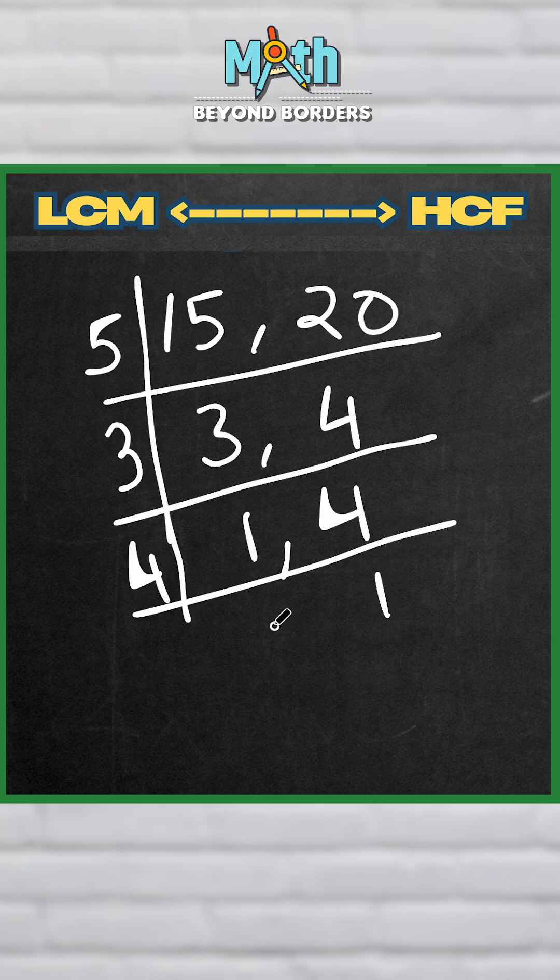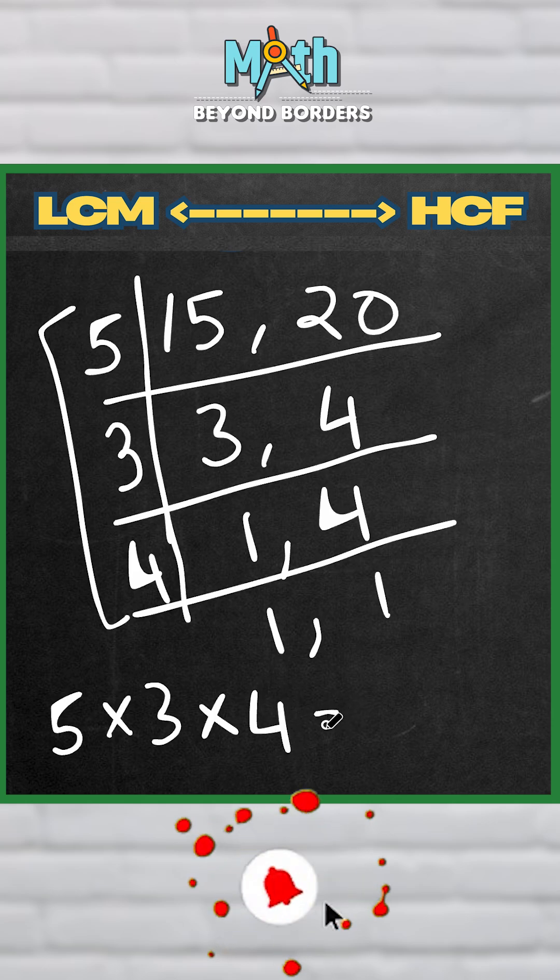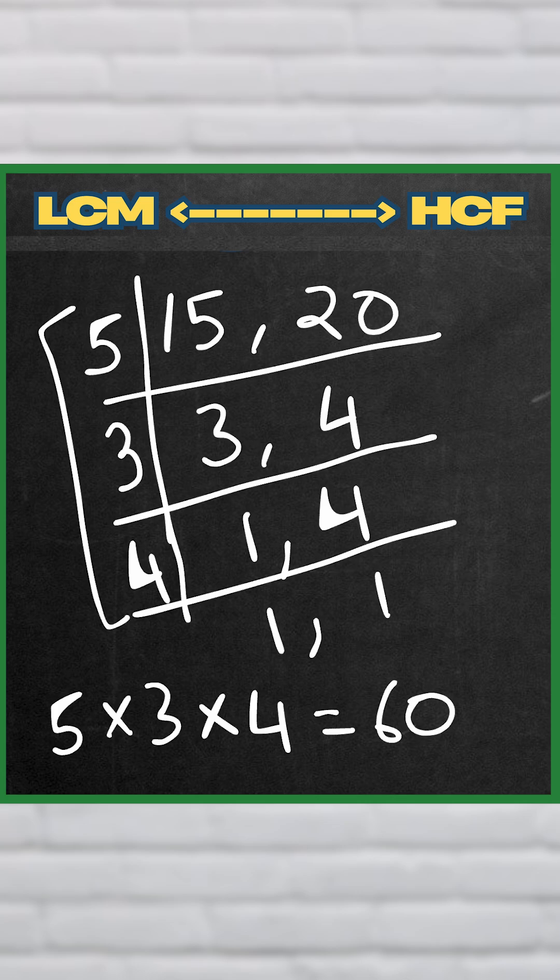And now let's divide 4, 1, and let's bring this 1 down as it is, right? Now these 3, when you multiply them together, will be your LCM. So 5 times 3 times 4 is 60, so 60 is the smallest number that is there in the table of 15 and 20 both.